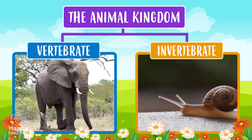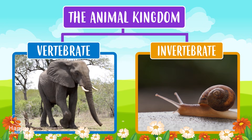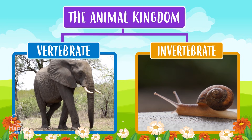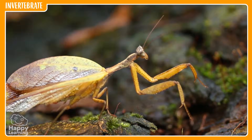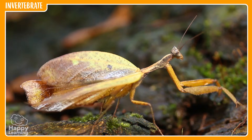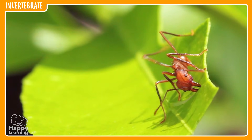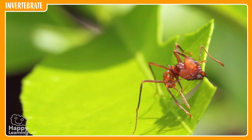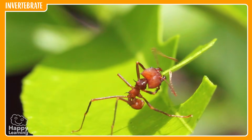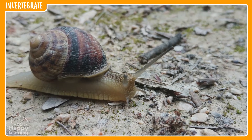Invertebrate animals, however, have no bones. They don't have an internal skeleton — like this ant or this slow snail.